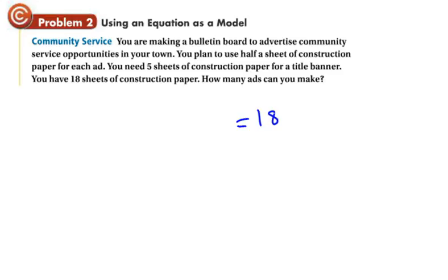Alright, so what we're saying here is you need one half a sheet. We're trying to figure out how many ads. So we're going to say x is equal to the number of ads. So that's what we're trying to figure out. You use one half a sheet per ad. So one half a sheet per ad. And we know we need 5 sheets for the title banner because that's part of the bulletin board as well. So we need 5 sheets no matter what. Plus one half per ad. And it's got to be equal to a total of 18 sheets because we don't have any more than that. So how many ads can we make? Let's just solve for x. Let's see if this makes sense too. When you work it out, it helps you figure out if it makes sense.